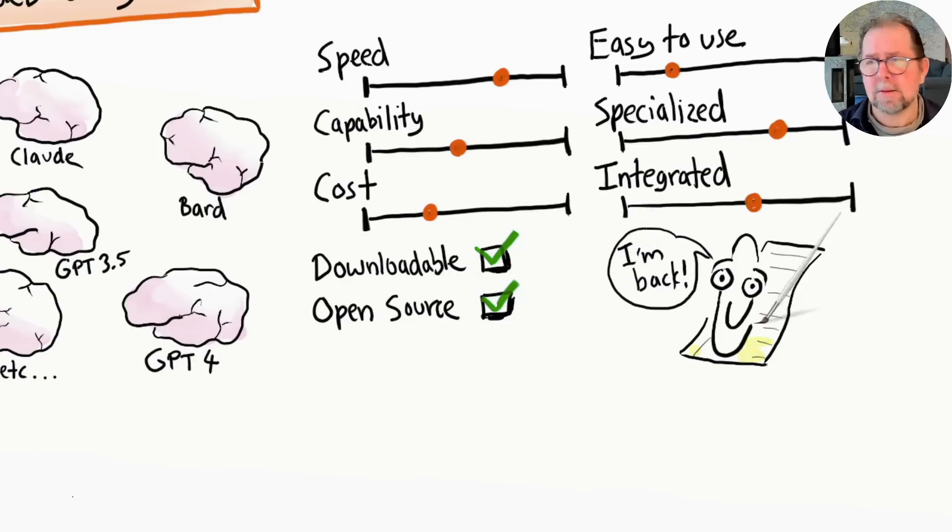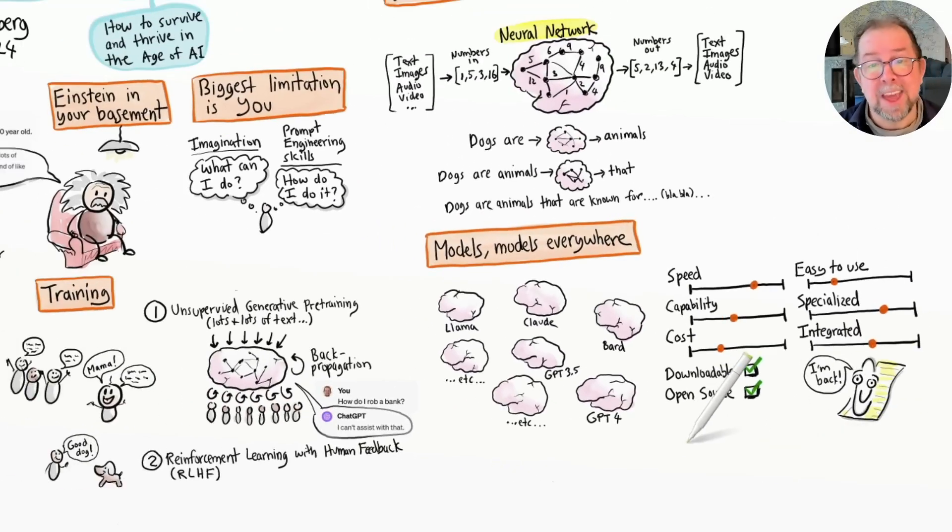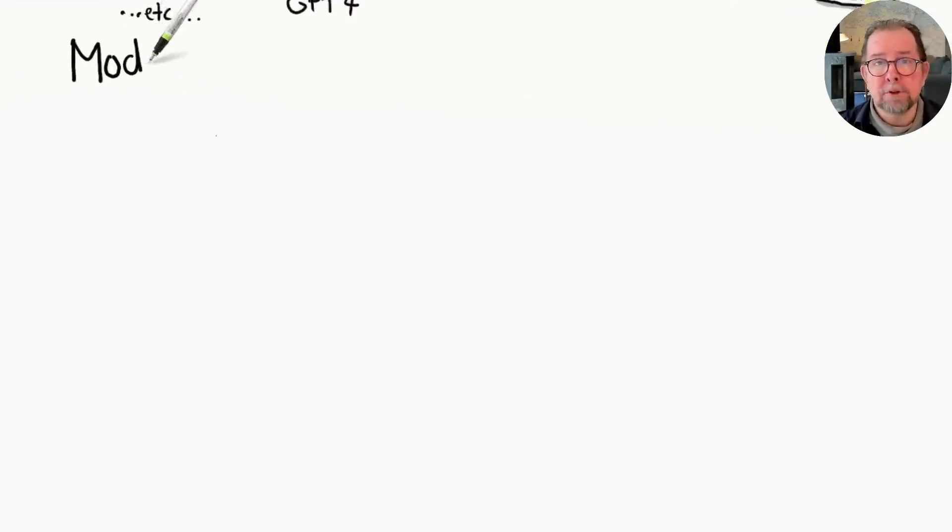It's the wild west. Just keep in mind that you generally get what you pay for. So with a free model, you may just be getting a smart high school student in your basement rather than Einstein. The difference between, for example, GPT-3.5 and GPT-4 is massive.